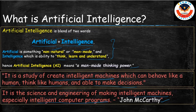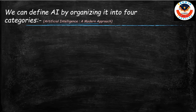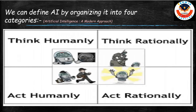There are four categories of AI, from the textbook 'Artificial Intelligence: A Modern Approach.' These four categories are: thinking humanly, thinking rationally, acting humanly, and acting rationally. These four categories define AI. Let's see each and every one of them.